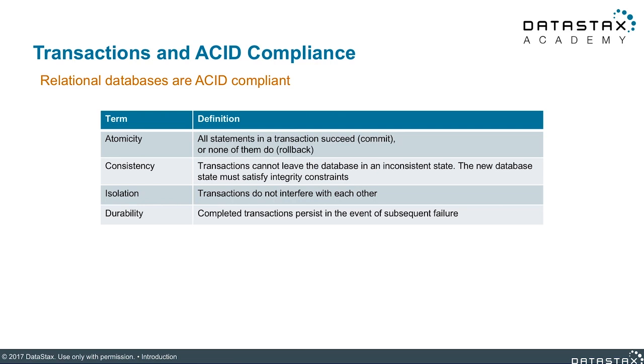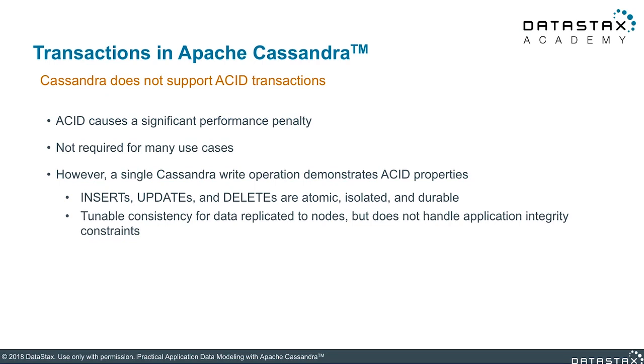Isolation refers to the constraint that transactions do not interfere with each other. Various relational databases support this to various degrees of strictness and support optimizations that bend this rule in certain circumstances. Research terms like linearizability if you want to dive more into this. Finally, durability refers to the persistence of the changes in a transaction even in the event of failure. Cassandra does not support ACID semantics, at least not in the same way as most relational databases. However, Cassandra does exhibit atomicity, isolation, and durability for writes to individual rows.